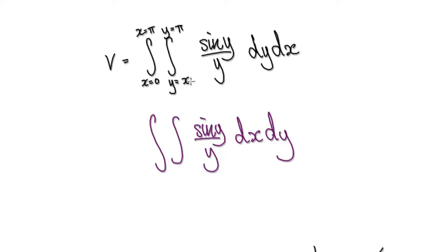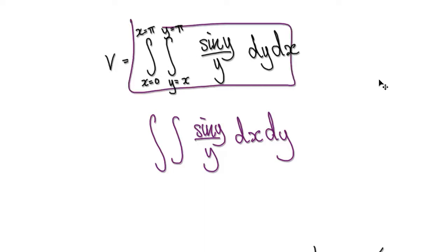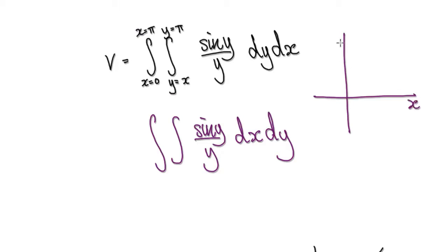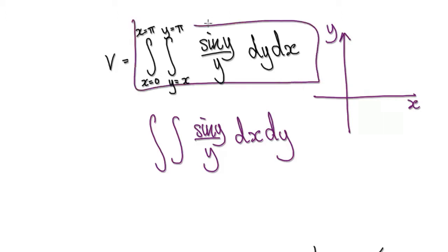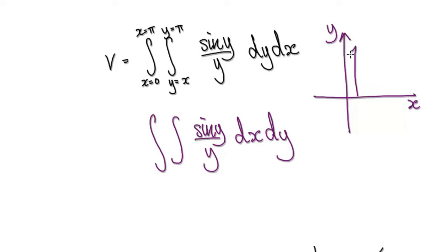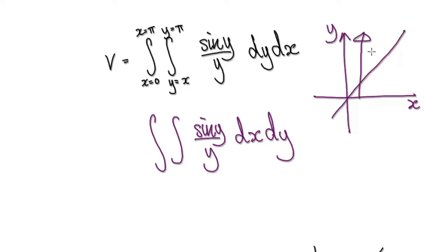The thing is, we have no idea what region we're talking about, so let's try to understand the region. If you look at your domain — this is your x-axis, this is your y-axis — at the moment the outer integral is moving in the y direction, so everything is parallel to the y-axis. Let's sketch y = x; it's going to look like a diagonal line. dy is always parallel to the y-axis so it's moving like this.